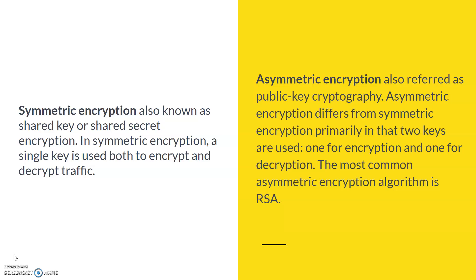Asymmetric encryption is referred to as public key cryptography, and it differs from symmetric encryption primarily because asymmetric key uses two keys: one is the public key and the second is the private key. The most common asymmetric encryption algorithm is RSA, which we will see in the next slide. Data encrypted using the public key is decrypted by the private key on the server. The server always holds the private key, while the public key is publicly available.